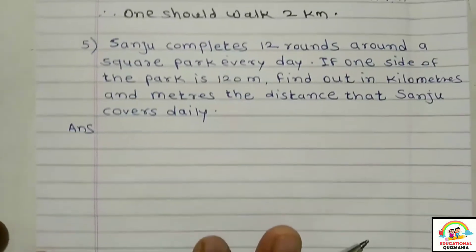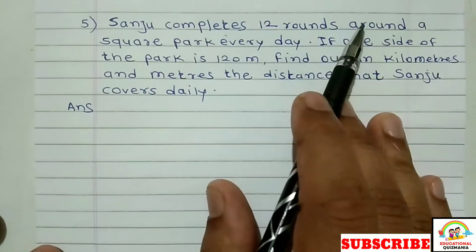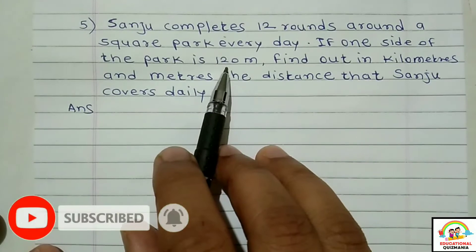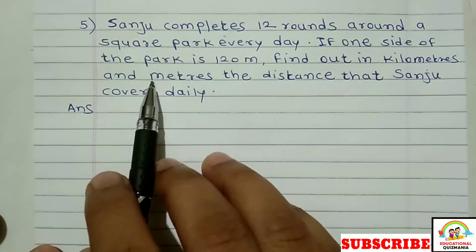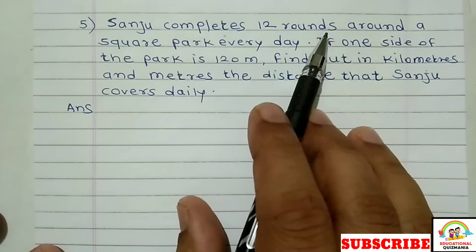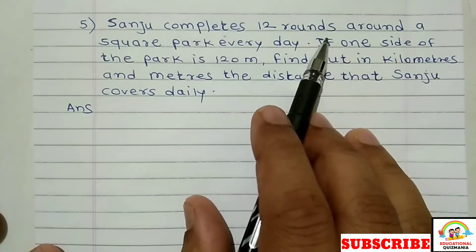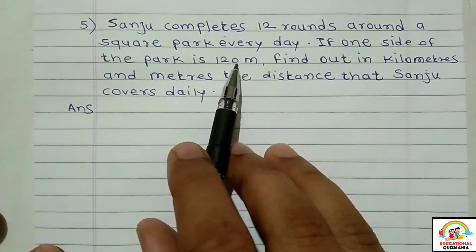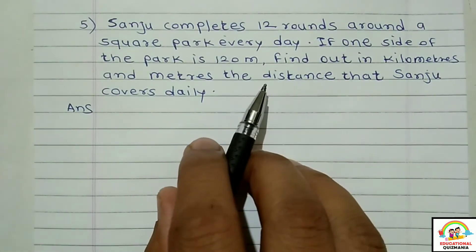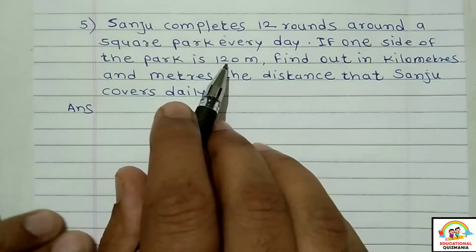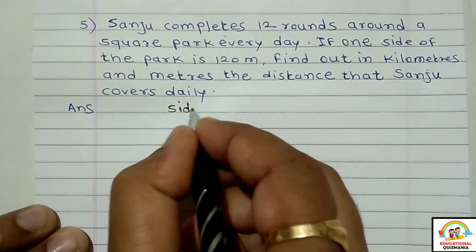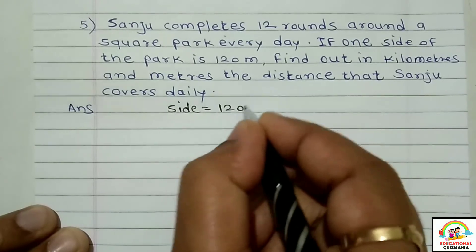Question number 5: Sanju completes 12 rounds around a square park every day. If one side of the park is 120 meters, find out in kilometers and meters the distance that Sanju covers daily. The given information: the bag (park) is square-shaped, and one side is equal to 120 meters.